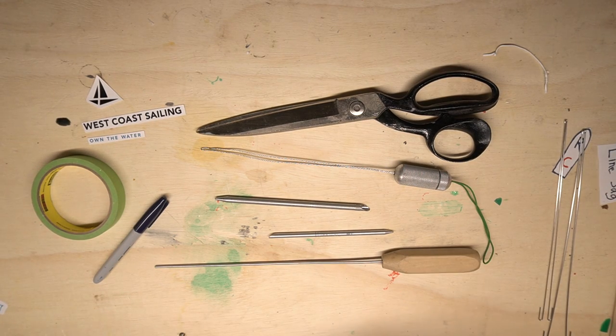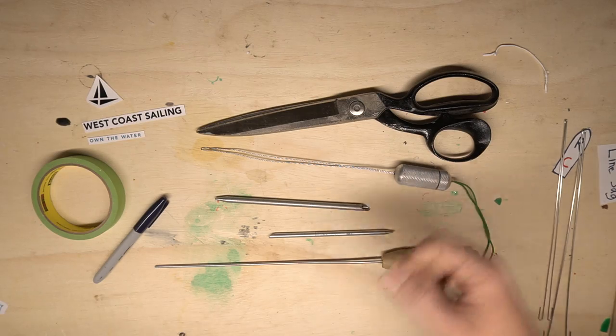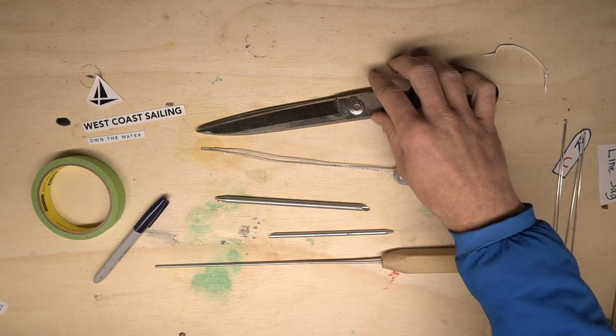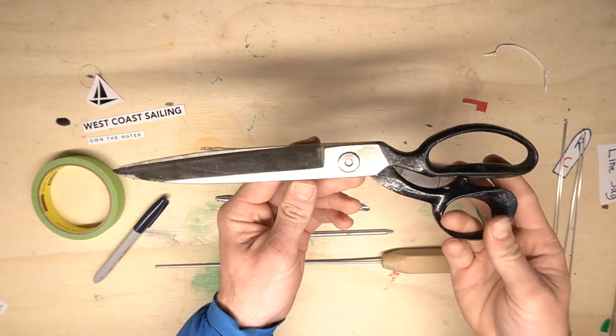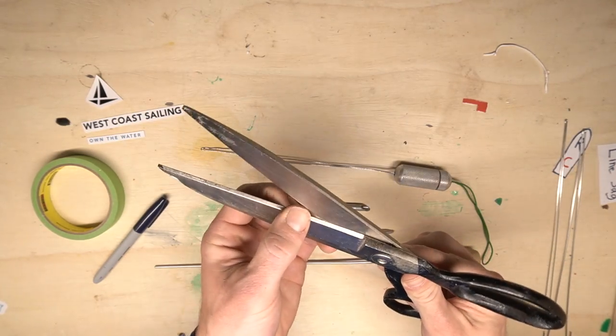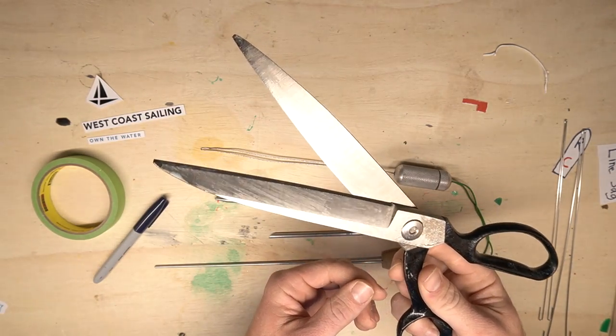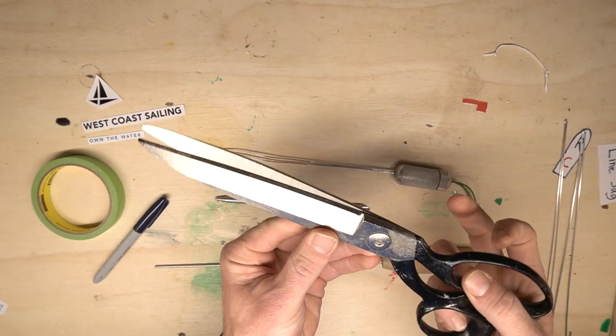We're going to talk about tools that you need to splice some ropes. Probably one of the most important tools you'll have in your kit is a really good pair of scissors. These ones are probably a bit overkill, but I know they're sharp and I can resharpen them, and you really want a good set of sharp scissors.